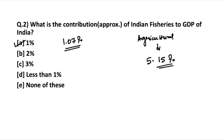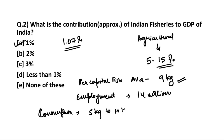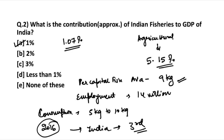There are various facts regarding fisheries you must remember. The per capita fish availability in India is 9 kg. Current employment in the fisheries sector is 14 million in India. Per capita fish consumption varies from 5 kg to 10 kg. As per the World Bank data report for 2016, India ranked third in terms of fish production.